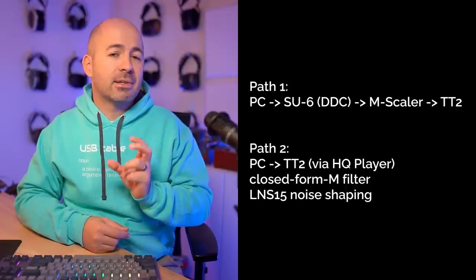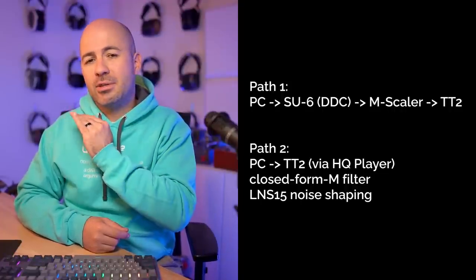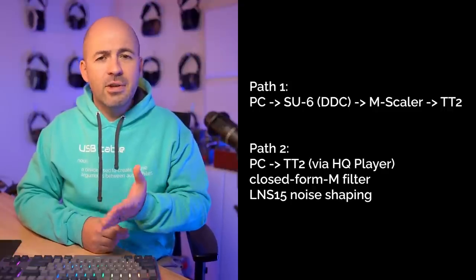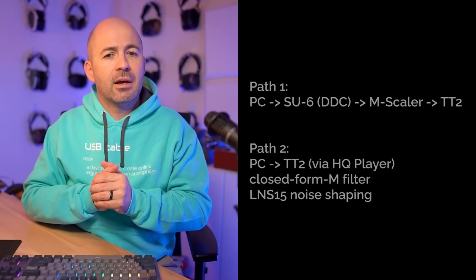What I was hearing when using the Closed Form M filters and LNS15 noise shaping into the TT2 was ever so slightly less depth than I got from the M-Scaler. The sound was also a touch smoother from the M-Scaler — not in a lacking-detail way, but just a more refined, easier-to-listen-to kind of way. That could be the M-Scaler dealing with extra noise. There were also different connection types involved, so there were a few other variables we can't completely eliminate.